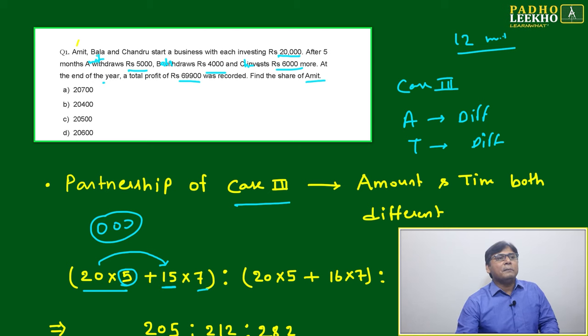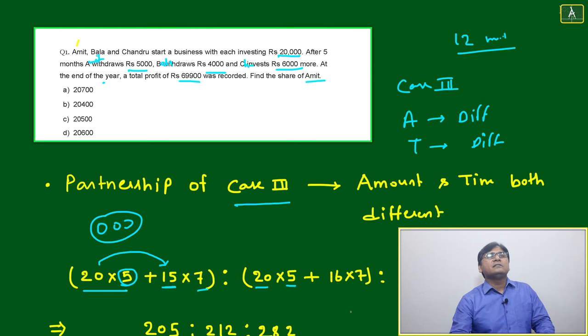Similarly, we will come to Bala. Bala started with 20,000 for 5 months and withdraws 4,000 after end of 5 months. Then remaining 16,000 for 7 months.